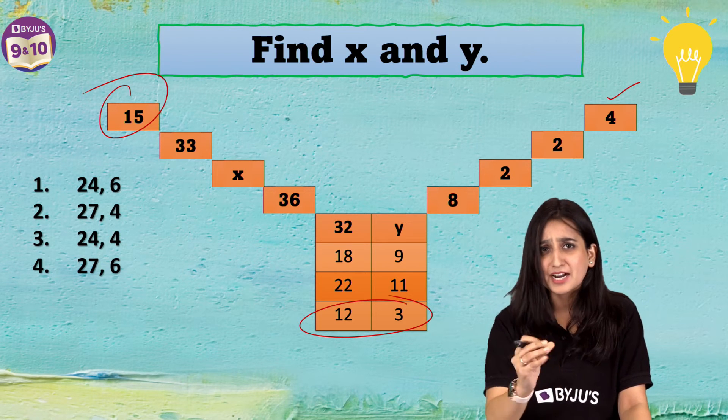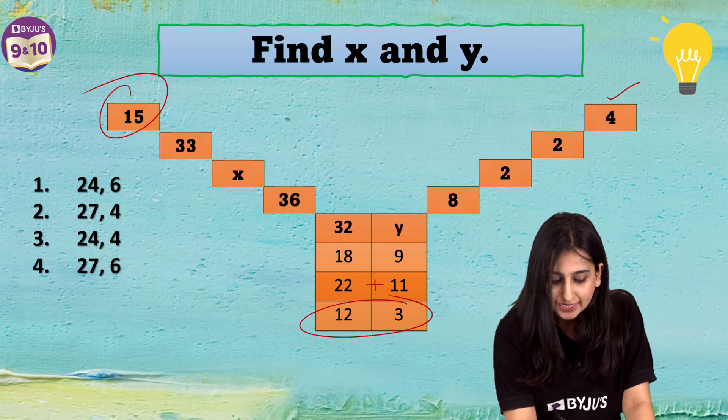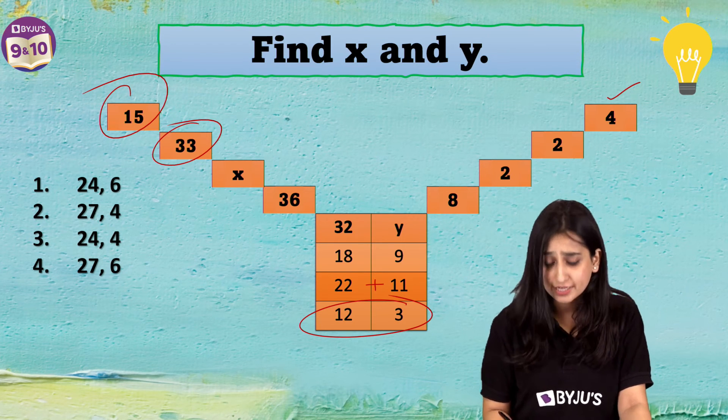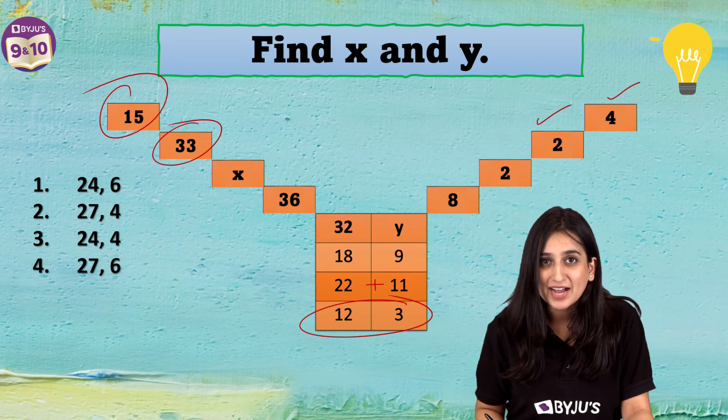Let's try to apply this pattern on the other numbers as well. So, if I add 22 and 11, I am getting 33. And what if I divide 22 by 11? I am getting 2. So, yes we got the pattern.